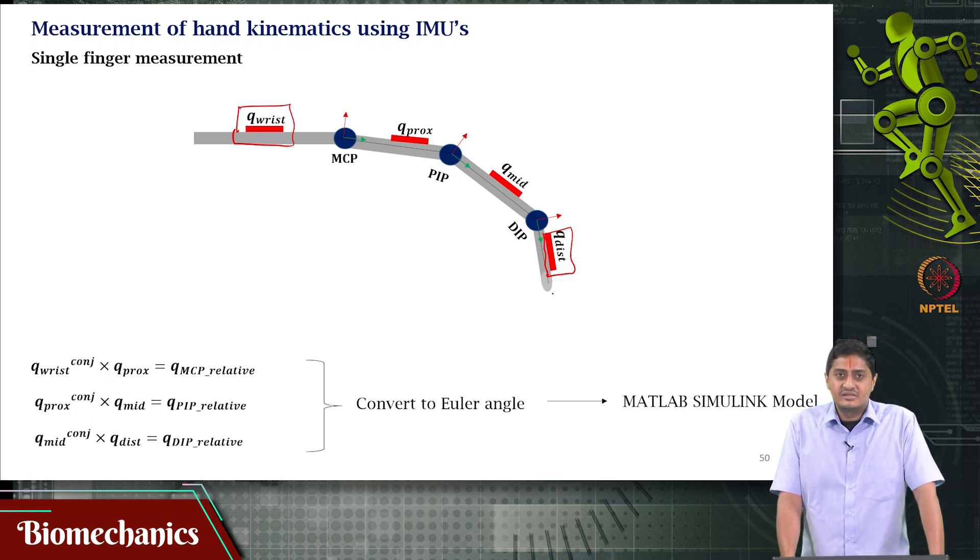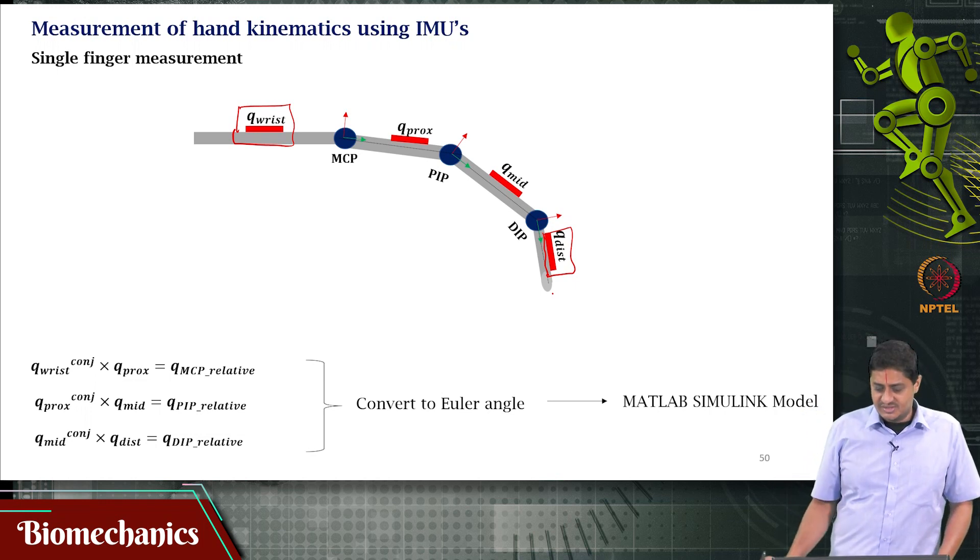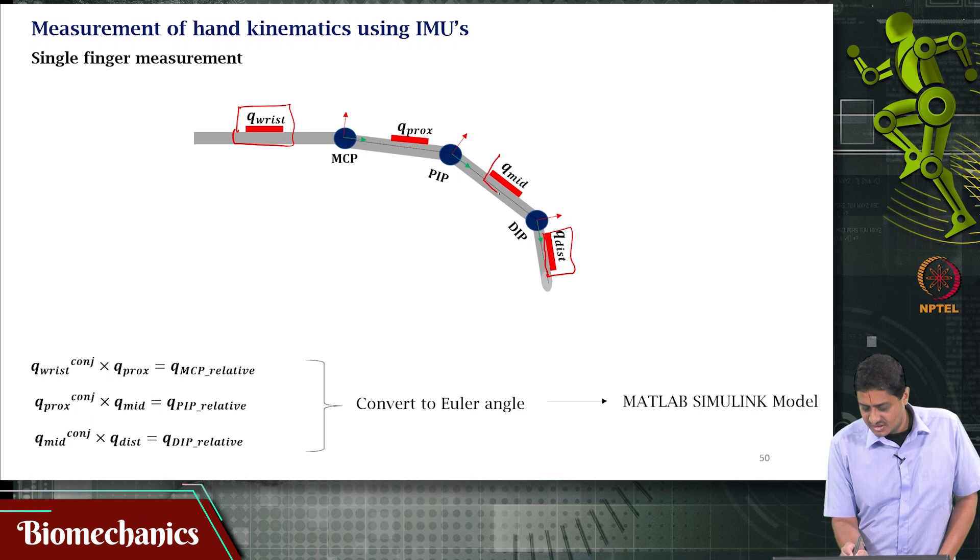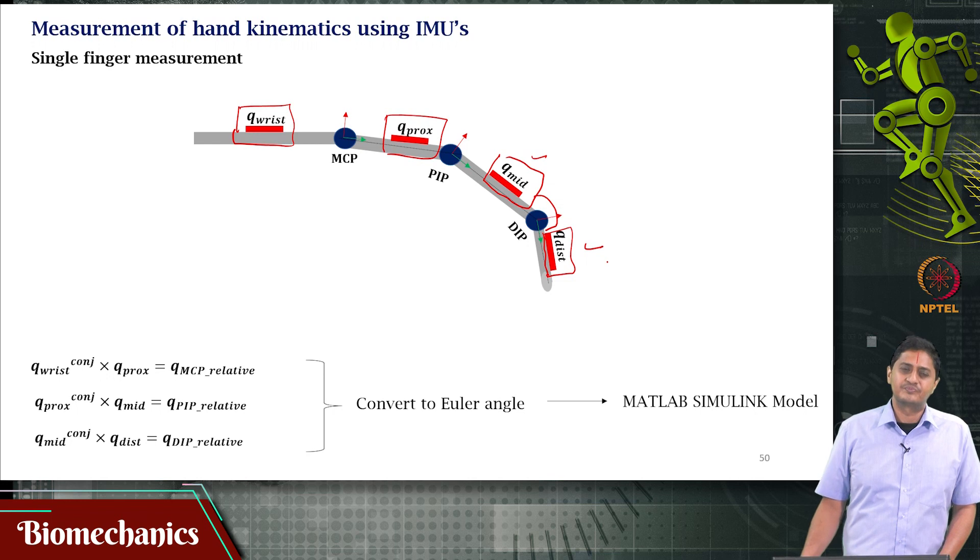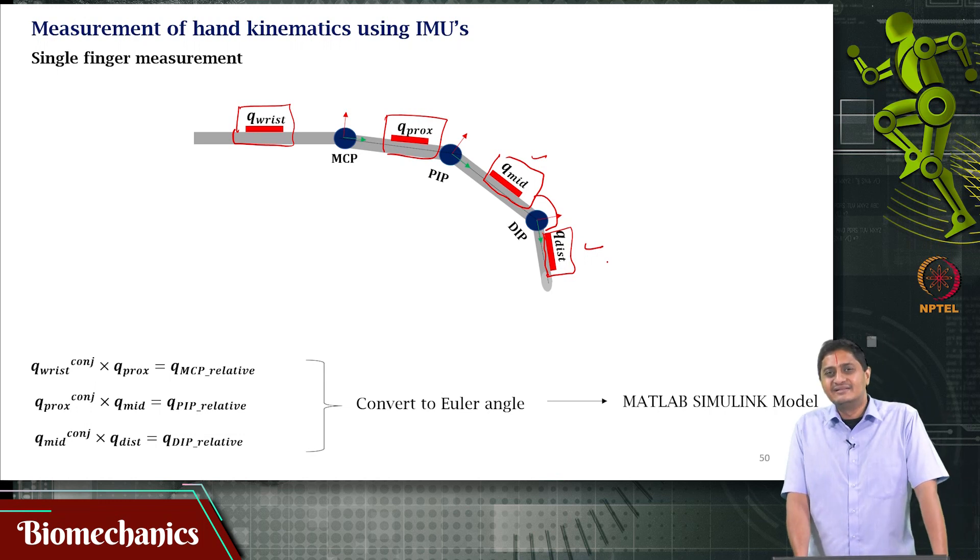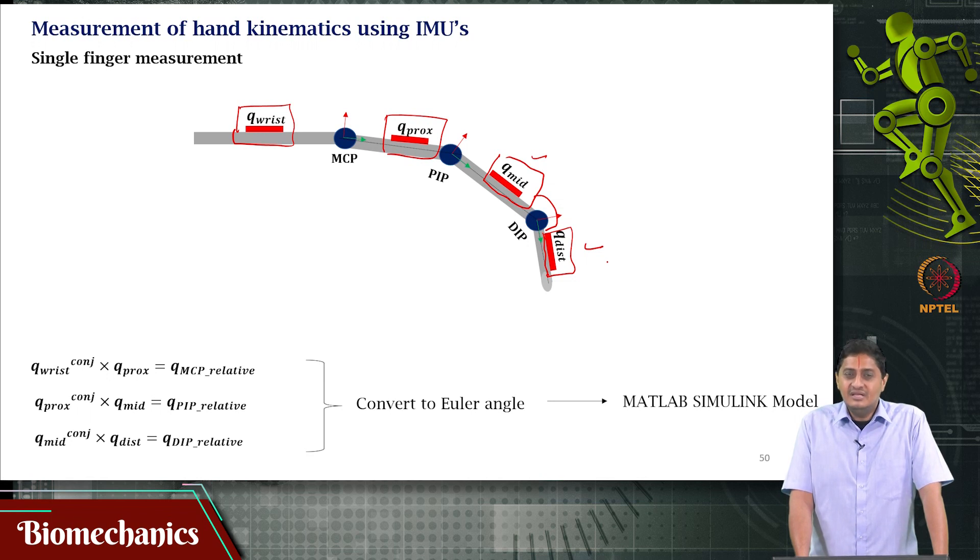Suppose you have 2 more IMUs. It might be better that you measure the orientation between this IMU, the mid IMU, and the distal IMU. This will give you the relative angle, and it's unlikely that the relative angle - even in Euler angle terms in the human body, at least in the fingers - may not cross these constraints.